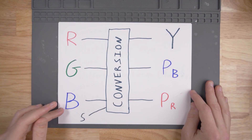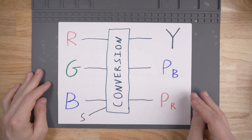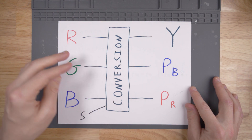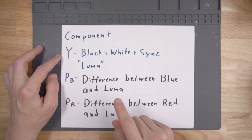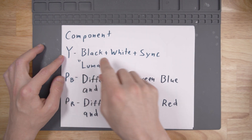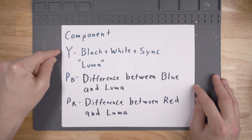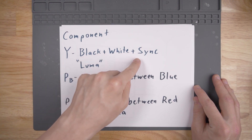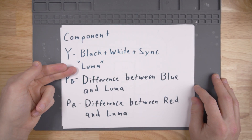The RGB sync signal can be sent through a converter to be changed into something called YPBPR. It's basically a math function that can convert the RGB into this YPBPR signal. Another term for YPBPR is actually component, and that's the component video that we're familiar with. This component signal is really three separate signals. The Y signal is really black and white information of a picture, and this black and white picture information also has the sync information running along with it, and together this forms what's called the Luma signal.